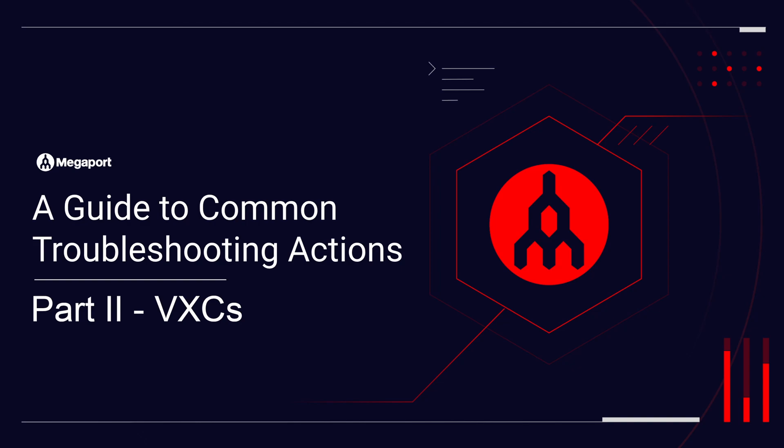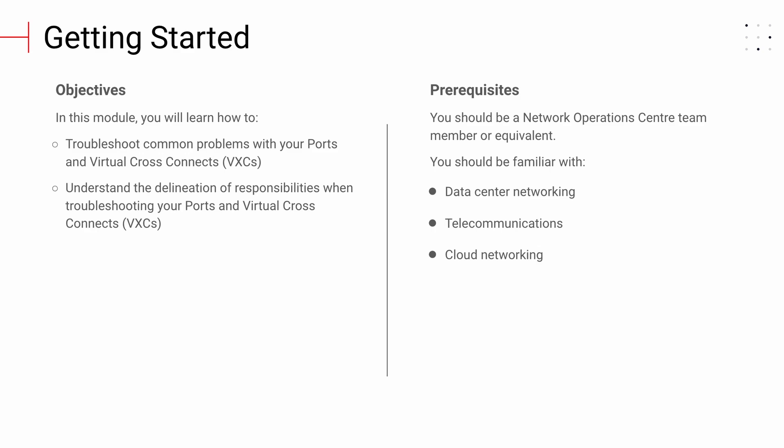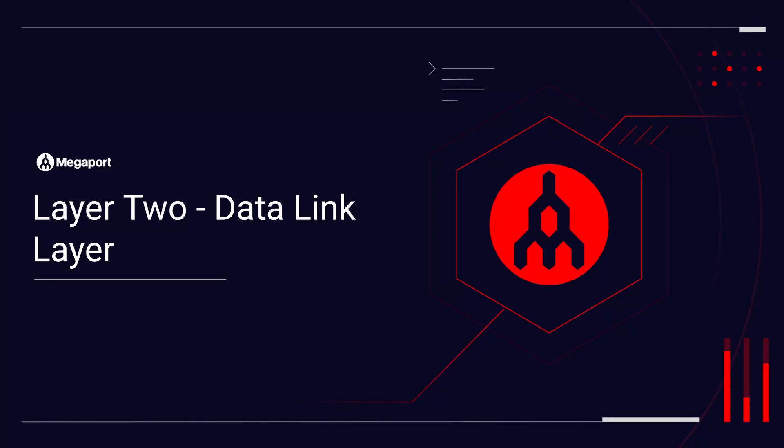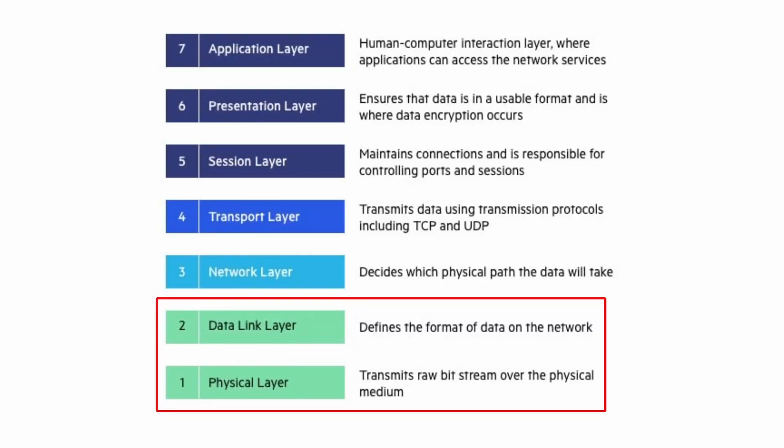We will cover layer two issues along with helpful suggestions for best practices. You should be familiar with basic data center networking and have company or technical admin privileges on the Megaport portal. You will learn how to troubleshoot common problems with ports and virtual cross-connects or VXEs. Megaport operates at layer two and below on the OSI model. Since we are unable to observe layer three protocols, troubleshooting these services can sometimes be a challenge.